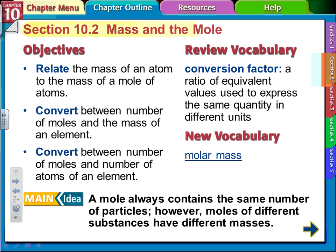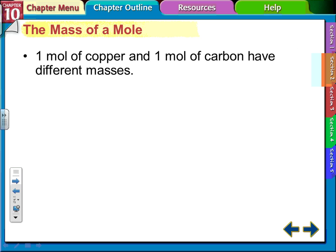A mole always contains the same number of particles; however, moles of different substances have different masses. A mole of copper and a mole of carbon have different masses. That's like a dozen baseballs and a dozen footballs — different things, different masses, different properties, but there are still 12 of them. Same thing with a mole of copper and a mole of carbon: same number of particles — Avogadro's number, 6.02 times 10 to the 23rd — but different masses.